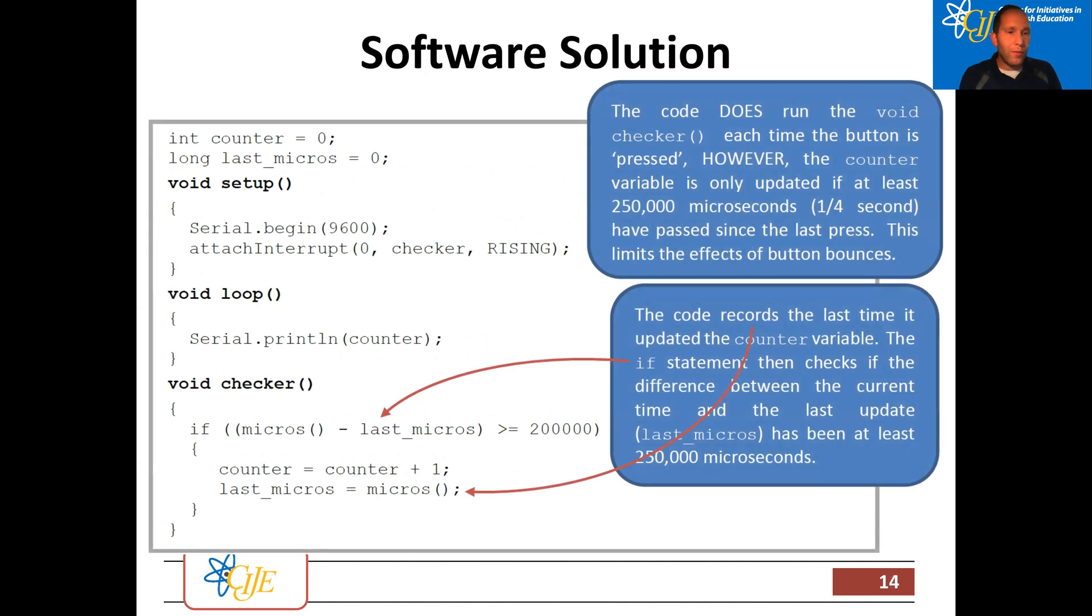So here's our same code. So if you look at the second to last line of the code in void checker, that's our ISR name, we're adding one to counter. Counter equals counter plus one. So we're counting essentially how many times the button was pressed. Every time you push the button, you stop the void loop, we go into your void checker, which is the name of the ISR, and we add one to counter.